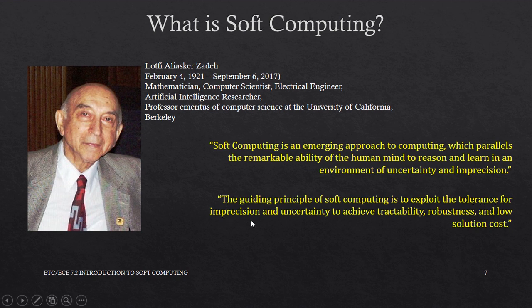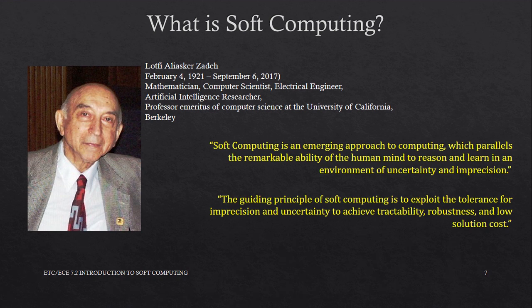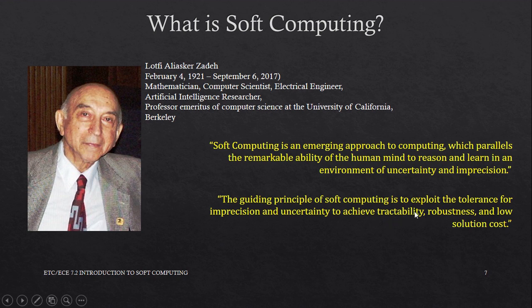He spoke about tolerance for uncertainty — the possibility that a good solution might exist, not the best, but a very good solution, when conditions become uncertain. Like, for example, these online classes. Conditions are not predictable, but we are all hoping for a good outcome — not the best, but a very good outcome — by having a new system in place. But how can we make sure that this system is good? It needs to be tractable. It needs to be robust, meaning strong, that cannot be broken easily. And it needs to have low solution cost — cost not just in terms of money, but in terms of computational requirements: time, space, complexity.